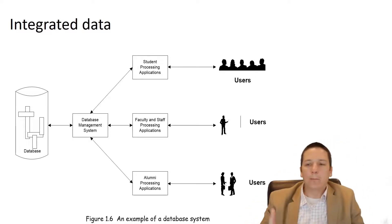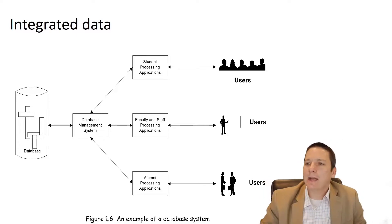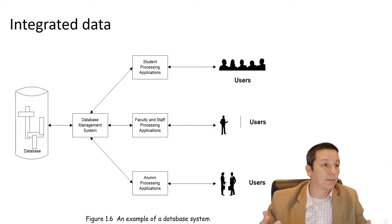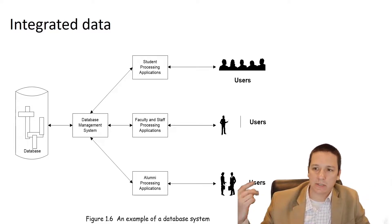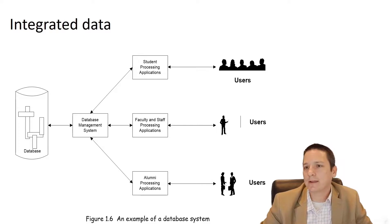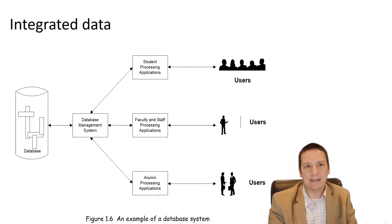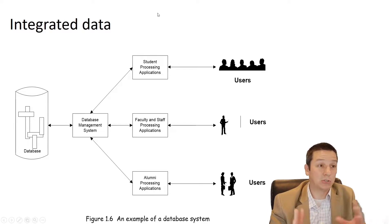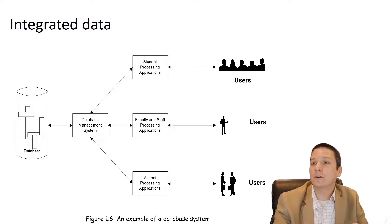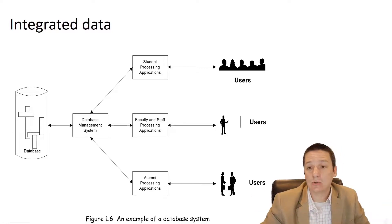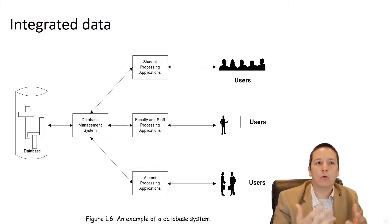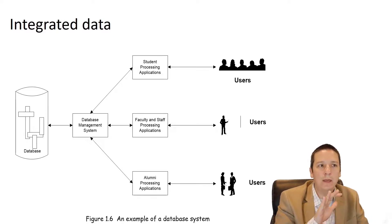As for flexibility, if we want to change the format of the phone number or start capturing additional data — like an email address for a new application — we don't have to change anything in the application programming. We just change the structure within the DBMS, which is a much less daunting task. And if we want to add a new application, like one for managing intramural sports teams, it can simply connect to the DBMS and immediately have access to all the existing student data, rather than starting from scratch.